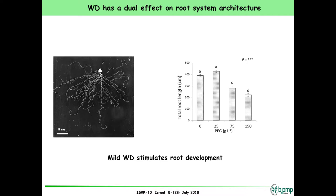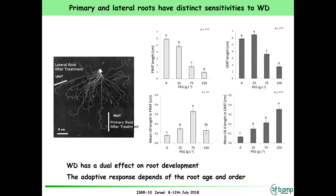With these plates, we were able to go further and analyze primordial initiation, examining different stages of primordial development. We initially thought the increased number of lateral roots was just due to earlier emergence, but it is also associated with higher primordial initiation. For different concentrations of polyethylene glycol, we see a clear stimulation of primordial initiation — almost double the level of initiation.